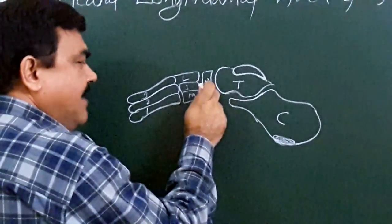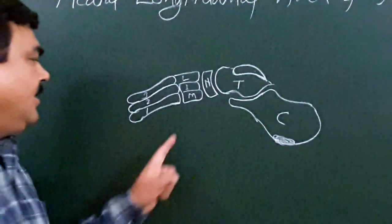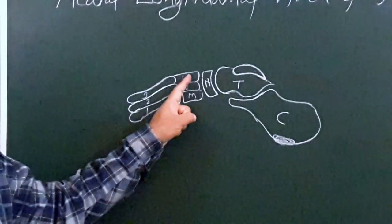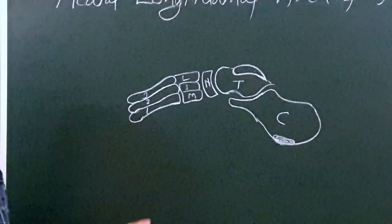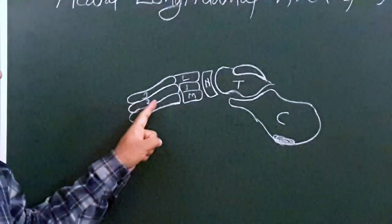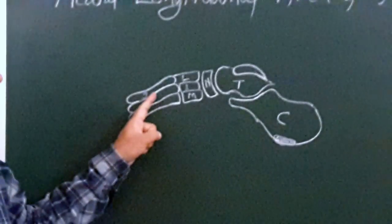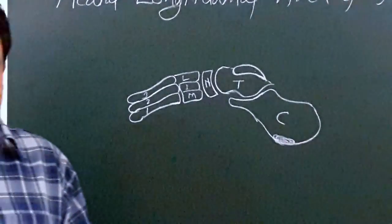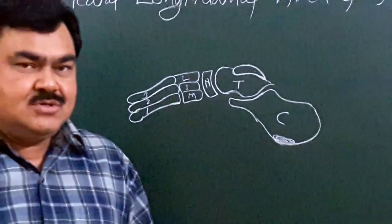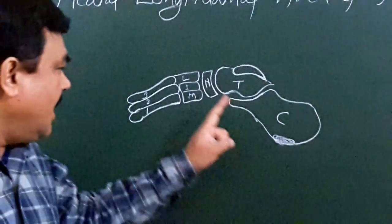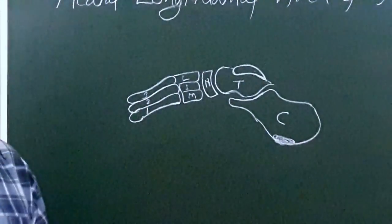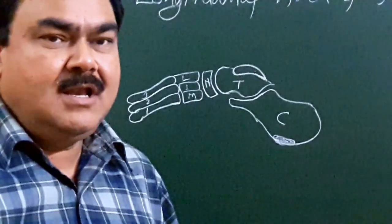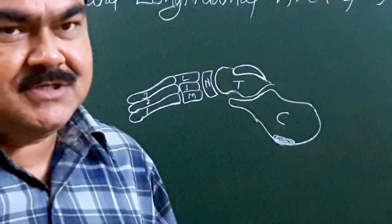Here is navicular, medial cuneiform, intermediate cuneiform, lateral cuneiform. This is the first, second, and third metatarsal bone. So all these bones form the medial longitudinal arch.